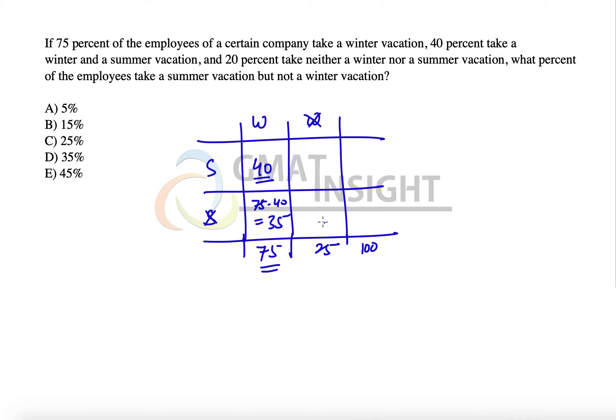20% take neither winter nor summer vacation, so 20 goes right here. That means the sum of the second row is 35 plus 20, which equals 55. The number above that is 100 minus 55, which equals 45. Then 45 minus 40 equals 5 at this place. We have the grid completely filled up now.